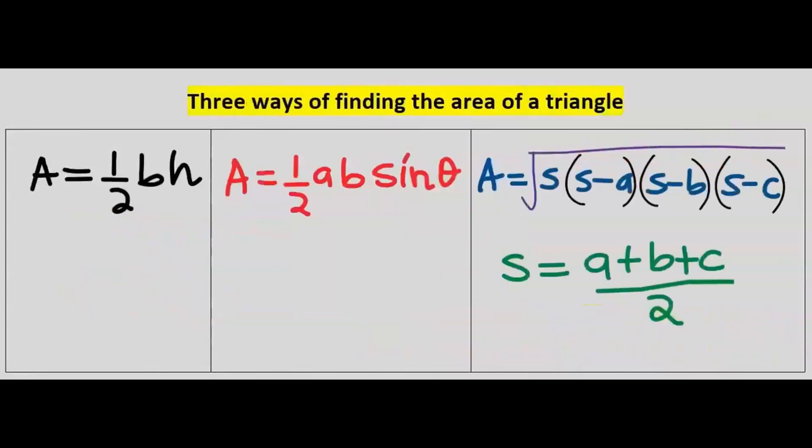There are three ways of finding the area of a triangle. The first one is when you have the base and the height. Next is when two sides are given and an angle. And the next one is when you have three sides, no height and no angle.